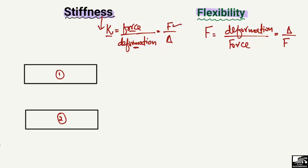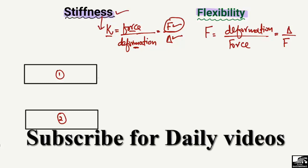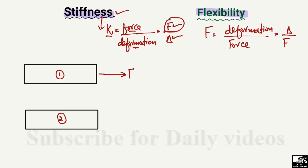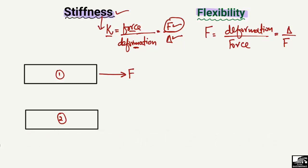Stiffness is the ratio of force per unit deformation. The amount of force you apply on an object to produce a unit deformation is known as the stiffness of the material. If I consider this is a steel bar and I apply a tensile load of magnitude F, and this object deforms by one millimeter, this deformation should always be one unit — one millimeter, one meter, or one centimeter.